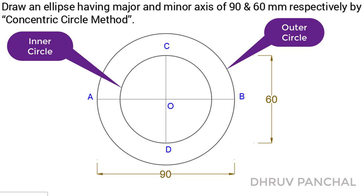After that, we will divide inner circle and outer circle into 12 equal parts. Now, connect all these points with the help of lines as shown.